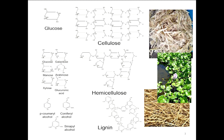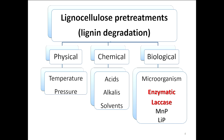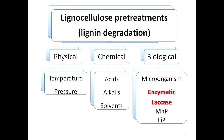In order to degrade lignin, several pretreatment methods have been developed. There are physical or chemical pretreatments, but I'm going to focus on the biological pretreatments. Biological pretreatments exploit the natural ability of cellulose microorganisms to degrade lignin. There are two ways to perform a biological pretreatment: one is to grow the microorganisms directly over the substrate, or we can take the ligninolytic enzymes that the microorganisms produce and use those enzymes over the substrate to degrade the lignin. Some of the ligninolytic enzymes are laccases, manganese peroxidases, and lignin peroxidases.